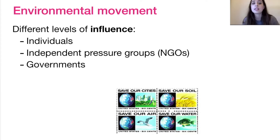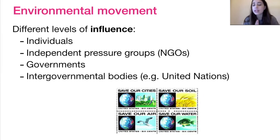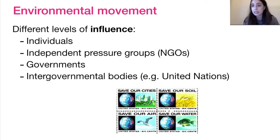Governments are the ones who can impose legislation and taxing policies to really help the environmental movement along. And finally, intergovernmental bodies — governments working together — is a crucial part of the environmental movement. As we will see in episode six, environmental issues like acid deposition really cross national boundaries, and it wouldn't be sufficient for just one government to care and try to tackle the issue. It really needs intergovernmental cooperation. An example would be the United Nations.